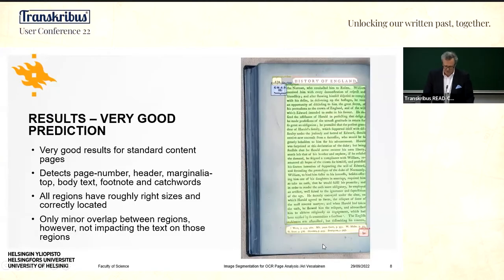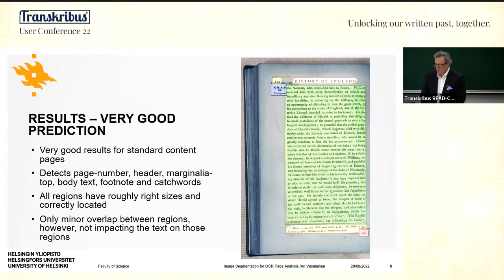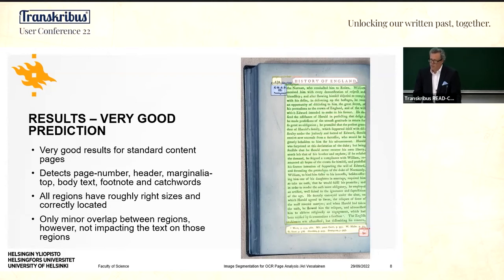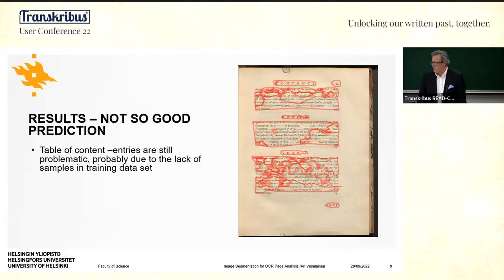Here is an example of a good result — I would say this is an almost perfect interpretation of the page. All page elements are correctly detected and correctly located. The only minor problem is some slight overlap between regions.